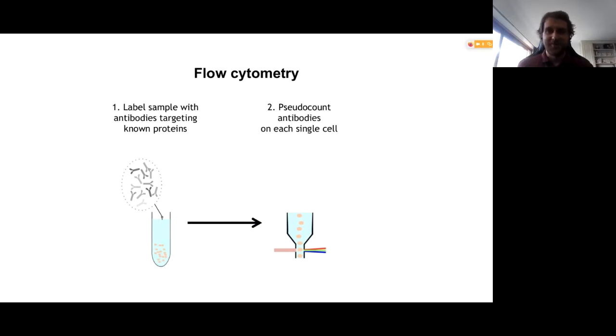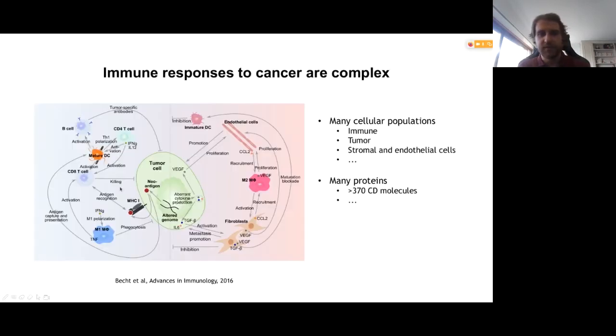For those unfamiliar with flow cytometry, I'll give you a very simple explanation. The way it works is you stain a cell suspension with antibodies, a set of selected antibodies that target known proteins, and then you run the cell suspensions through flow cytometers. That lets you count the number of antibodies on each cell and estimate the expression of these selected proteins on your single cells. It has very high cellular output. However, the number of proteins is limited. That's kind of a problem.